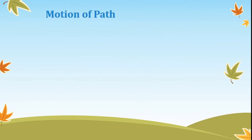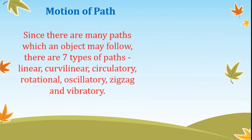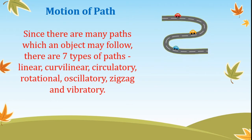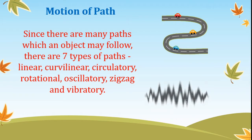Motion of path. An object may follow seven different paths: linear, curvilinear, circulatory, rotational, oscillatory, zig-zag, and vibratory.